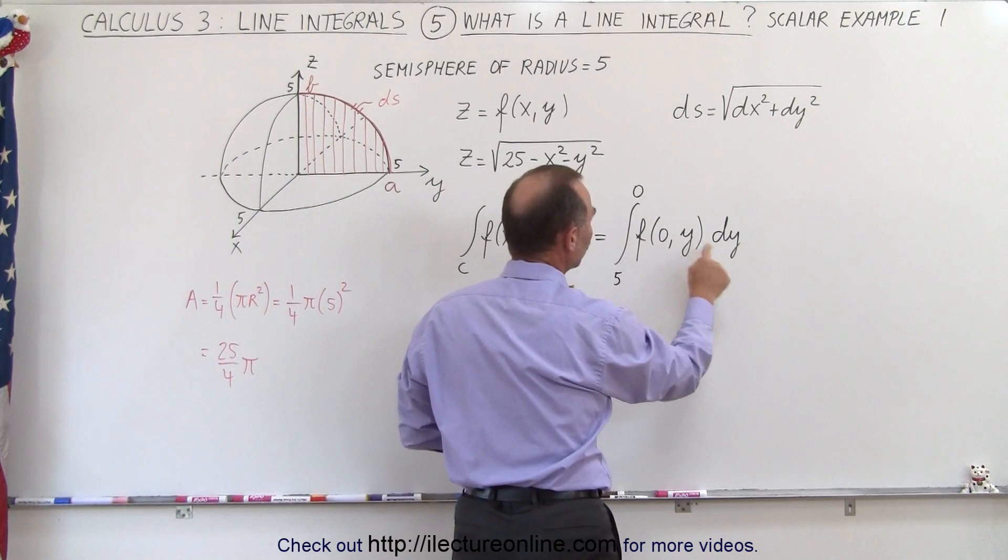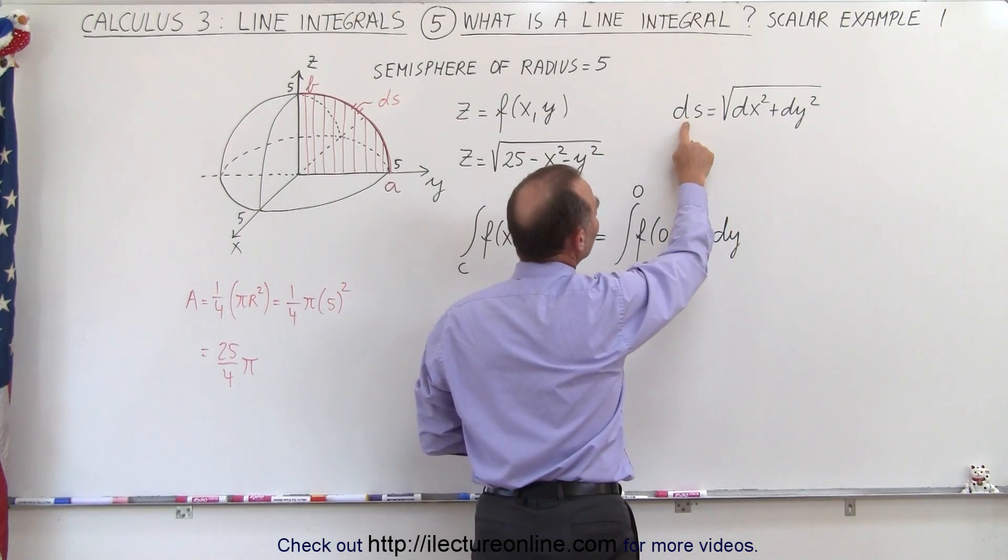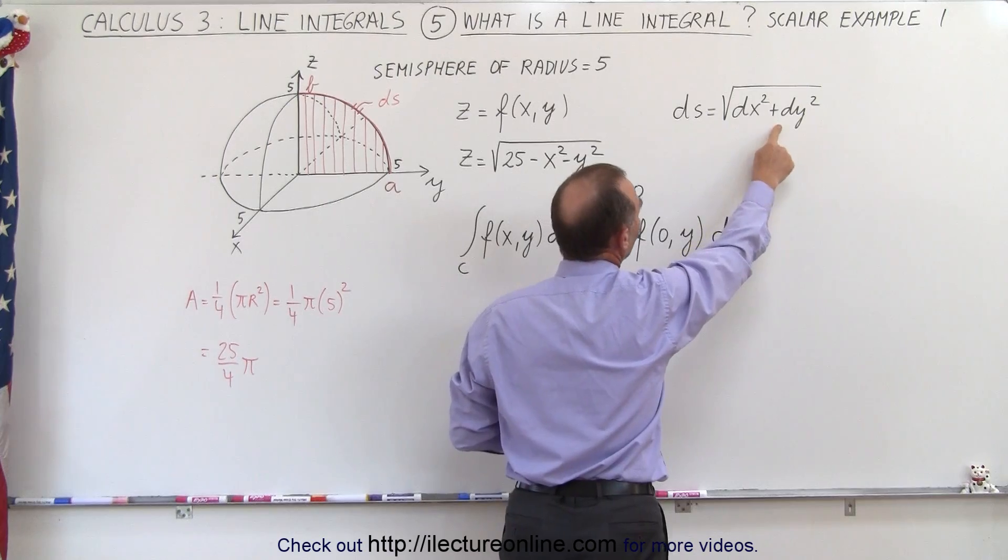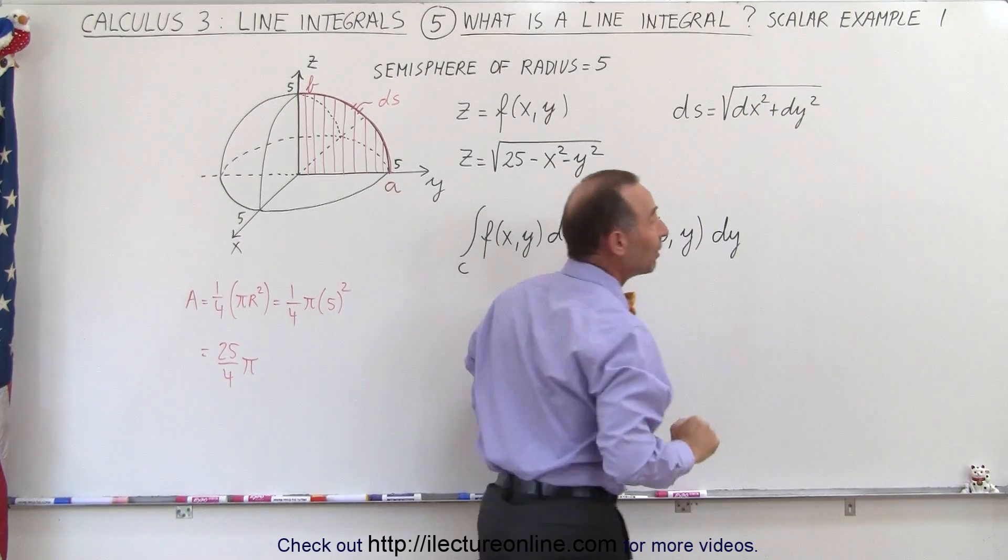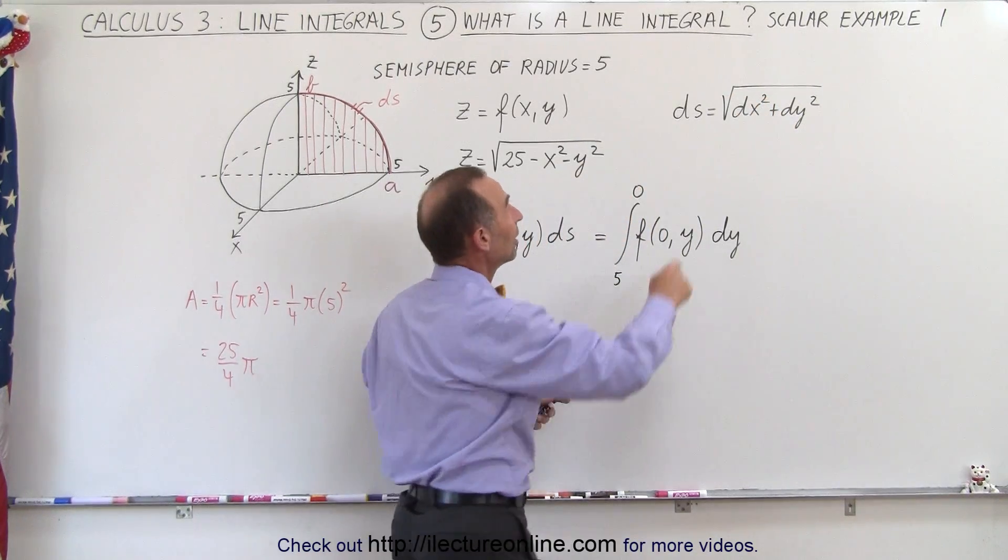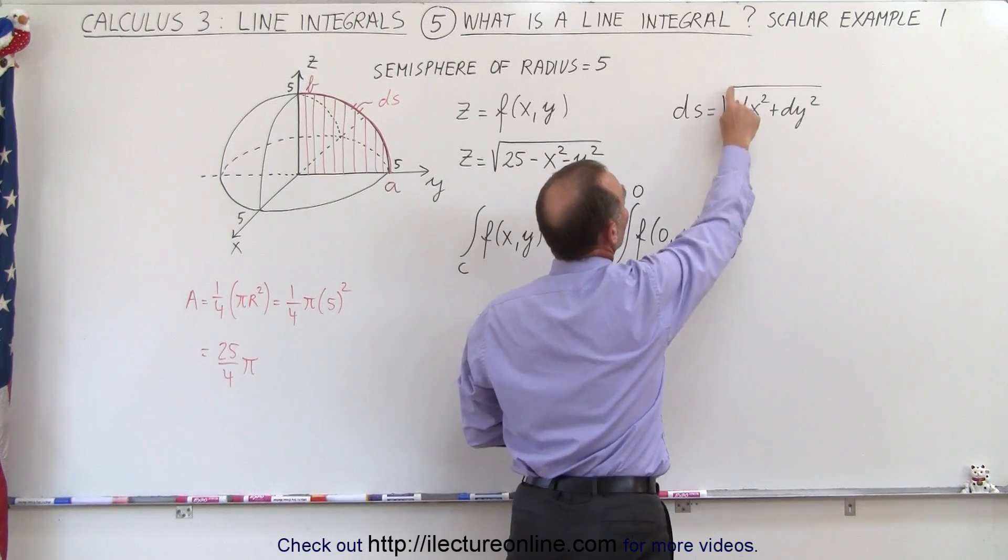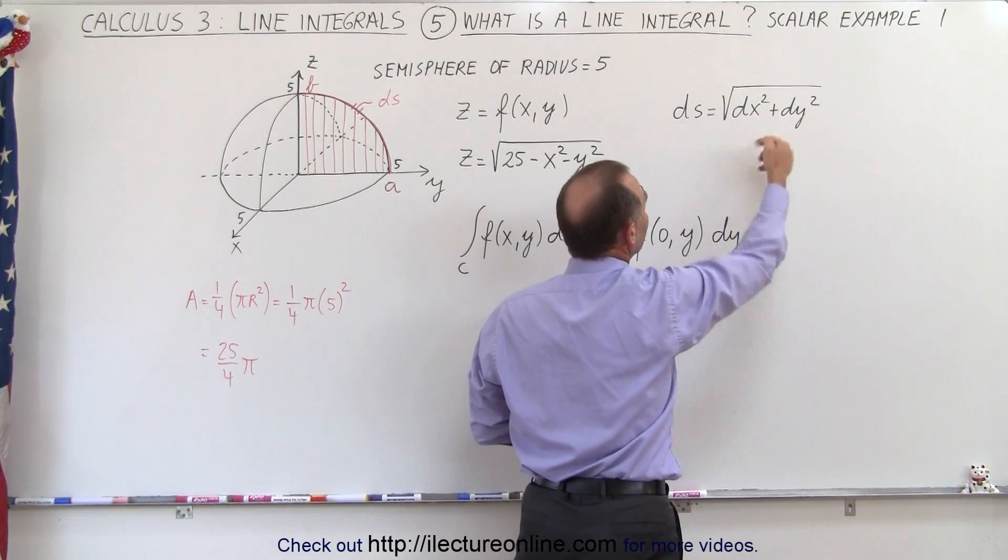And my ds will then change to dy, since ds is equal to the square root of dx squared plus dy squared, and since dx is going to be 0, because x doesn't change, then ds is going to be equal to the square root of dy squared, or simply equal to dy.